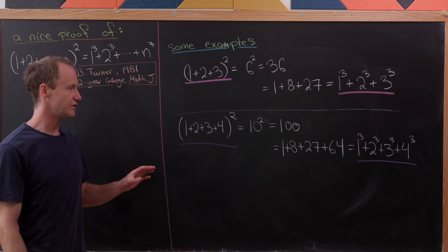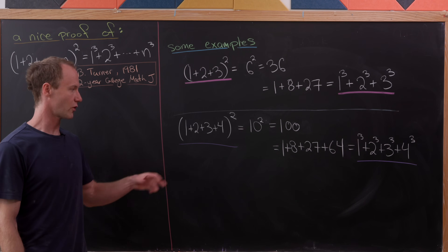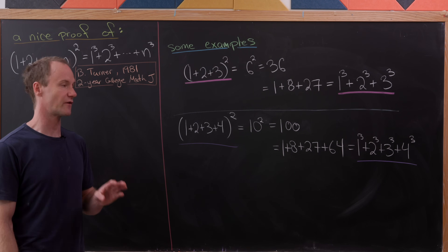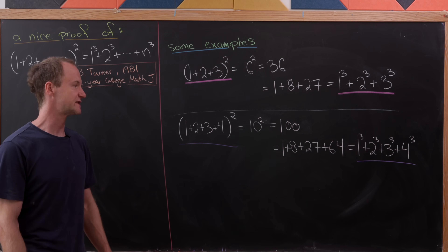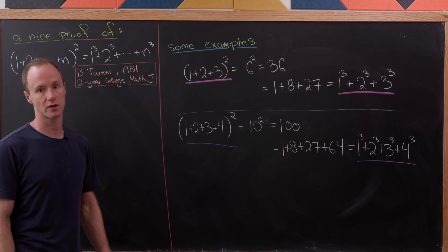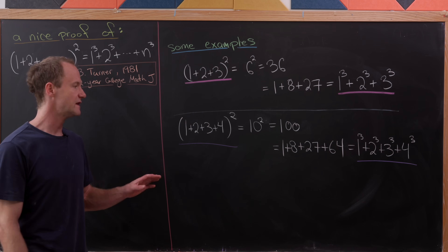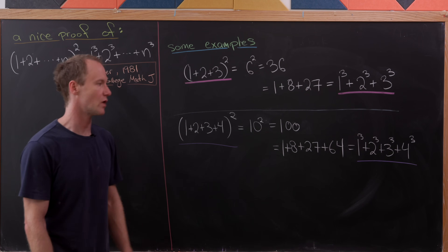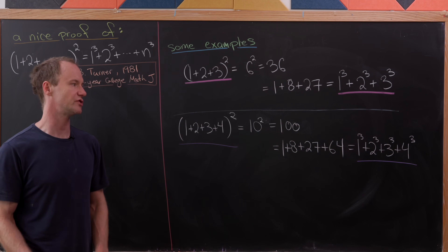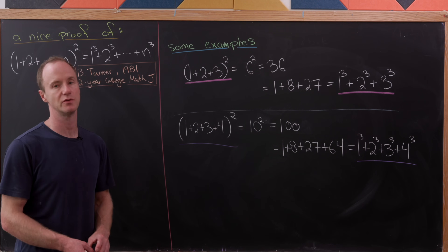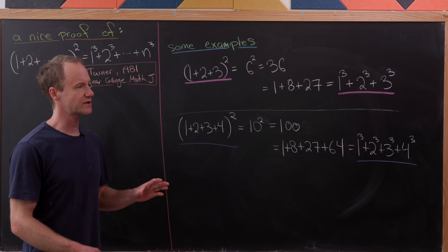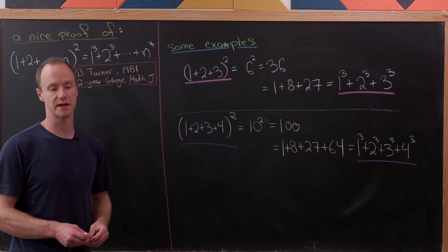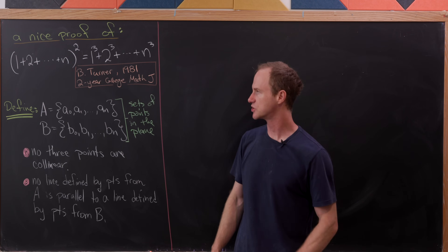We can also do that with the fourth number: one plus two plus three plus four, squared, is ten squared or one hundred, and that decomposes as one cubed plus two cubed plus three cubed plus four cubed. Now let's jump into the proof.